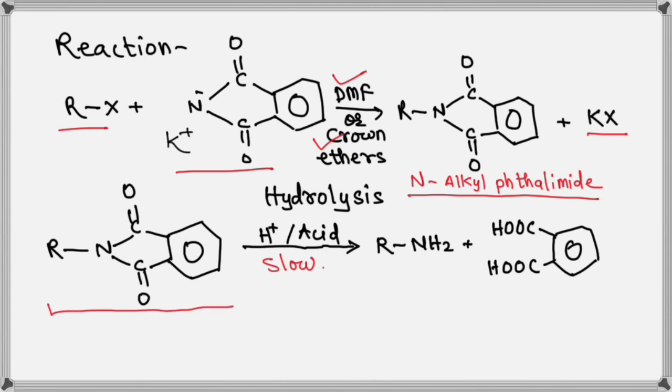When this N-alkyl phthalimide is hydrolyzed in presence of acid, which is mostly used method, which is quite slow, it produces primary amine and phthalic acid.